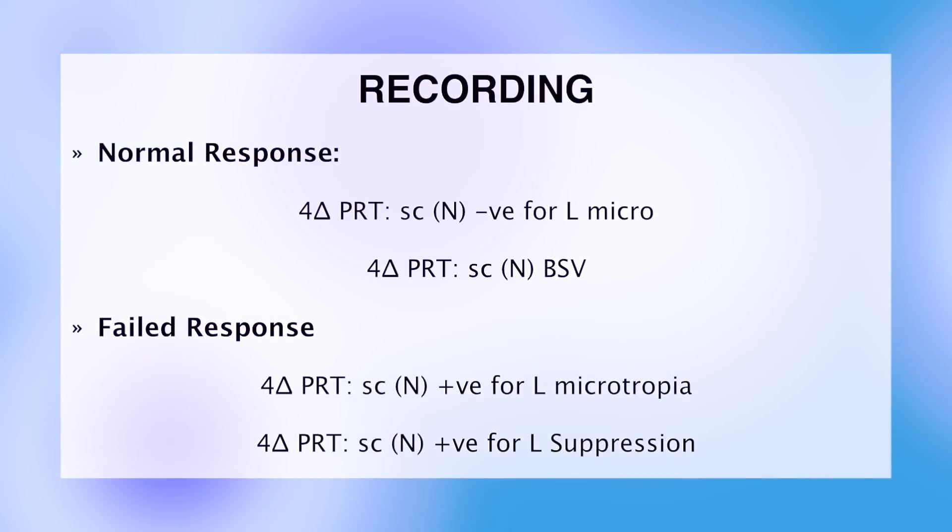There are alternative ways to record for the four prism diopter test. For a normal response, you can write a negative for microtropia or BSV to show that the patient has passed. A failed response can be recorded as positive for whichever eye that was found to have a microtropia or the reason behind the microtropia, for example suppression.